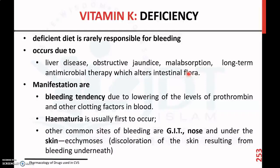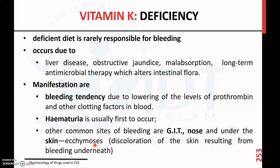Vitamin K deficiency leads to bleeding tendency due to lowering of prothrombin levels, which is a clotting factor. This can manifest as hematuria — presence of blood in urine. Other common sites of bleeding include the GI tract, the nose, and under the skin as ecchymosis, which is discoloration due to bleeding in the body. These are the different manifestations of vitamin K deficiency.